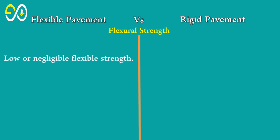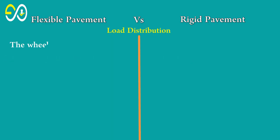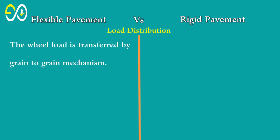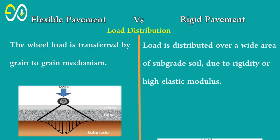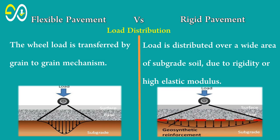Flexible pavement has low or negligible flexural strength, whereas rigid pavement has high flexural strength. In flexible pavement, the wheel load is transferred by a grain-to-grain mechanism. In rigid pavement, load is distributed over a wide area of subgrade soil due to its rigidity and high elastic modulus.